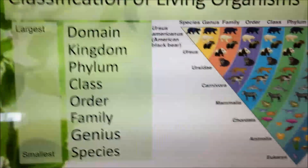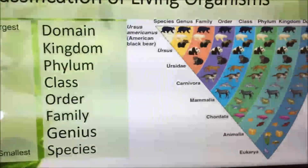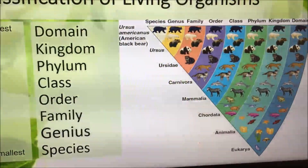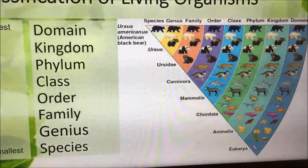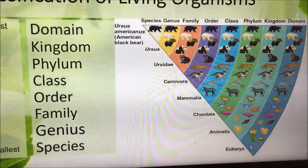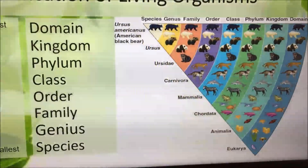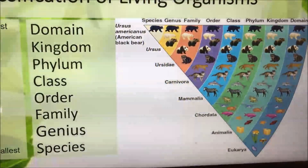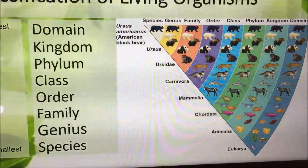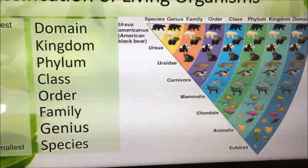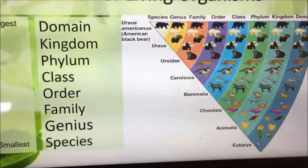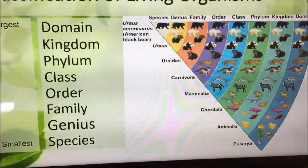We start off by looking at its domain — all organisms fit underneath a domain, and there are actually three of those. Then we have our kingdoms — the animal kingdom, the plant kingdom. There are different branches of the kingdom: phylum, class, order, family, genus, and then species. Those last two is how we get our two-part name — our genus and species.